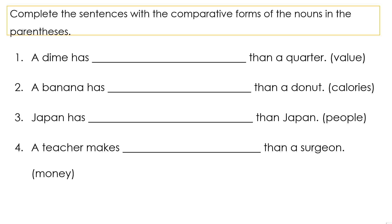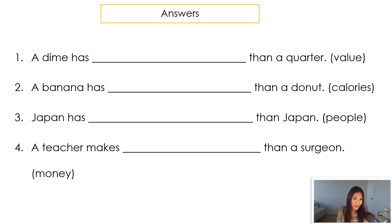Let's finish off this lesson with a few exercises. Please complete the sentences with the comparative forms of the nouns in parentheses, and please pause this video for more time. To do this exercise you need to be able to tell the difference between a count and a non-count noun. If you are struggling to tell the difference, I will link a video down below that talks about non-count nouns and how to categorize them.